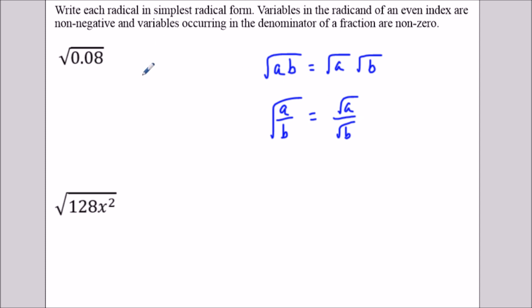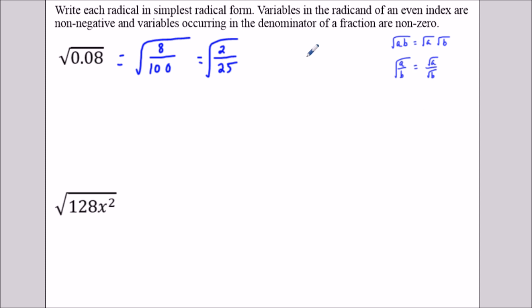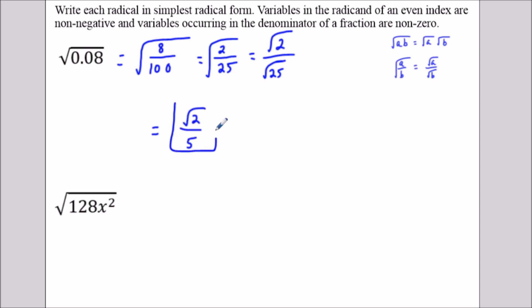We're gonna use that for all the problems here. So the first question, we could rewrite this decimal as 8 over 100, and then 8 over 100 will simplify to 2 over 25, which we could accomplish by dividing the numerator and denominator by 4. Now we'll use that second property and break this into square root of 2 over the square root of 25. The square root of 2 doesn't simplify, but the square root of 25 is equal to 5, and since 5 is a rational number we could stop here.